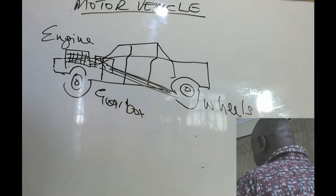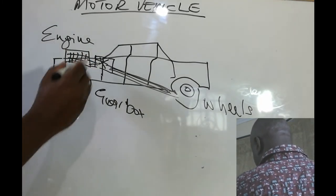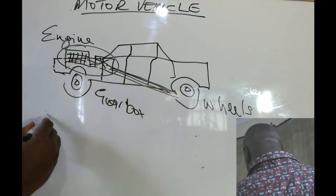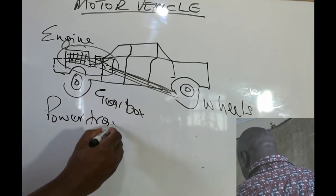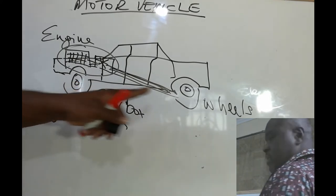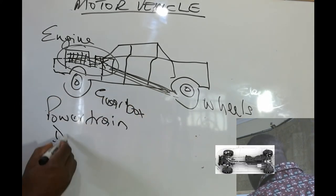So let us break this down further. We have the engine and the gearbox. That is called your power train. Then we have the wheels and the suspension, which is called the drive train.